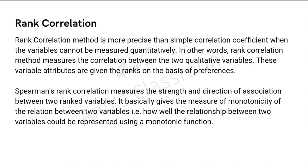Rank correlation is a method more precise than simple correlation when variables are qualitative in nature. While Pearson's or Spearman's correlation coefficients are used with quantitative measurable data, rank correlation is used to rank qualitative variables and find relationships between them. It measures the correlation between two qualitative variables where attributes are given ranks based on preferences. Spearman's rank correlation measures the strength and direction of association between two ranked variables, giving the measure of monotonicity — how well the relationship between two variables can be represented using a monotonic function.